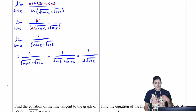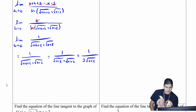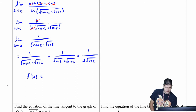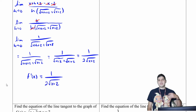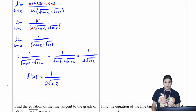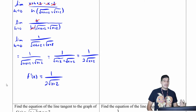Since I have two of those, I get one over two times the square root of x plus two. So f prime of x equals one over two square root of x plus two. That's why we worked on all those limits before — so we can find these derivatives now.